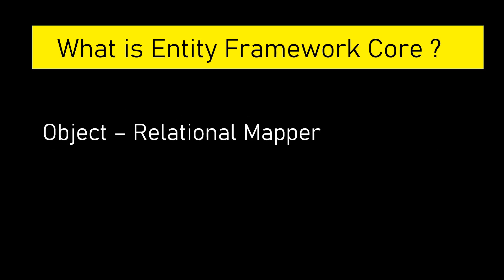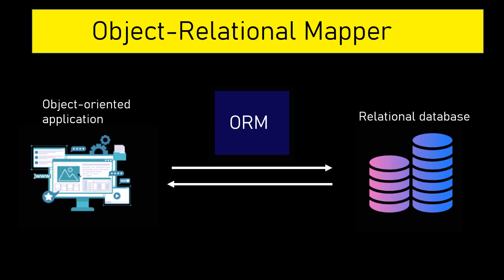In technical terms, Entity Framework Core is an Object Relational Mapper. What is an Object Relational Mapper? You can think of it as a software that sits between your object-oriented application and a relational database, and it will help you to talk to the relational database using object-oriented language. You will understand it better when we start working with Entity Framework Core.